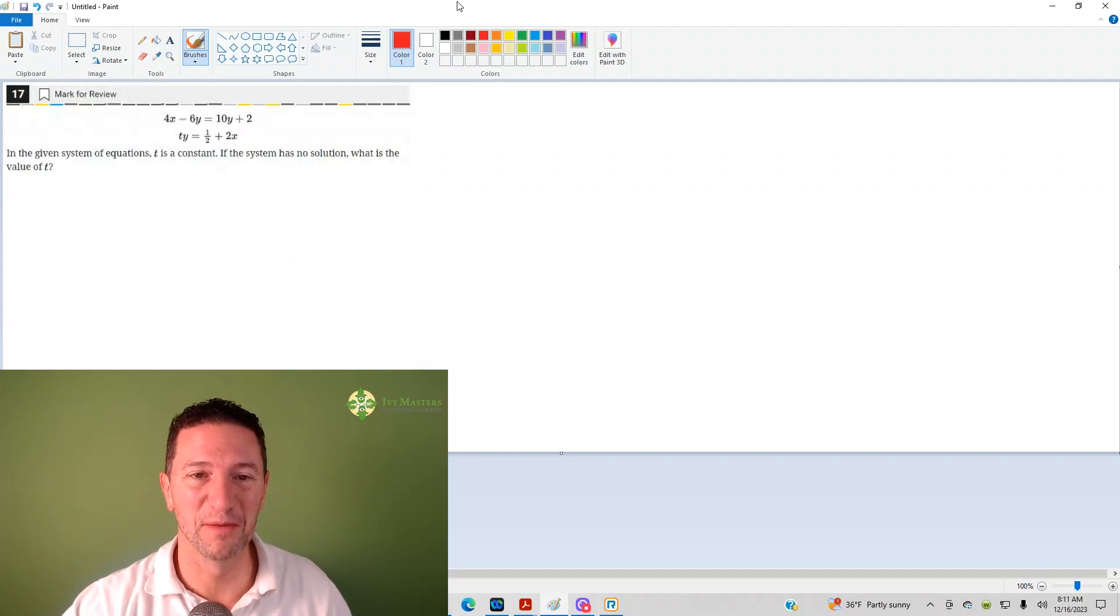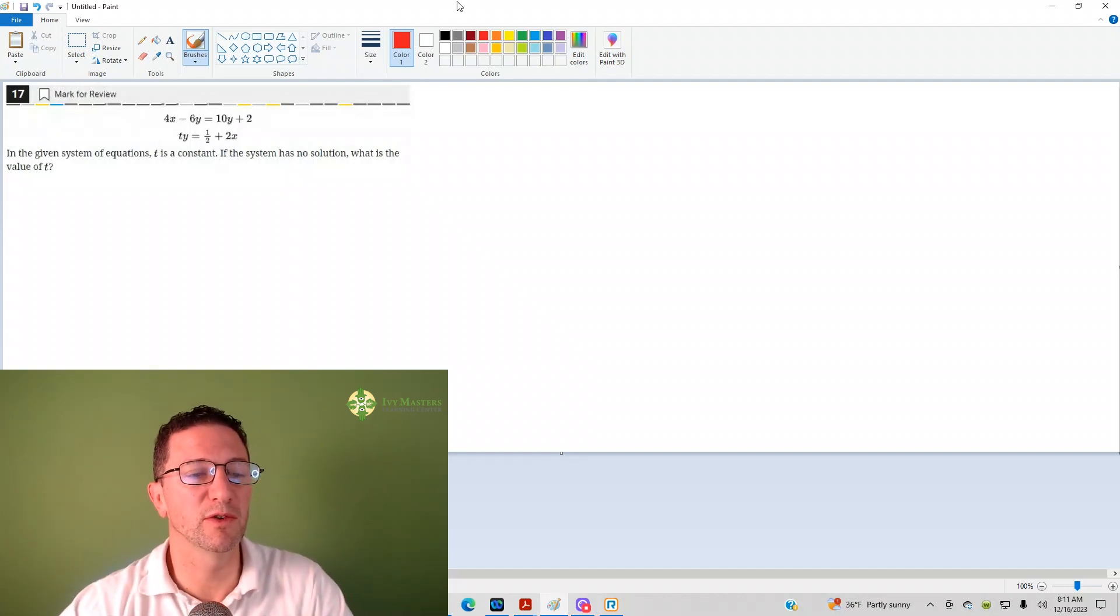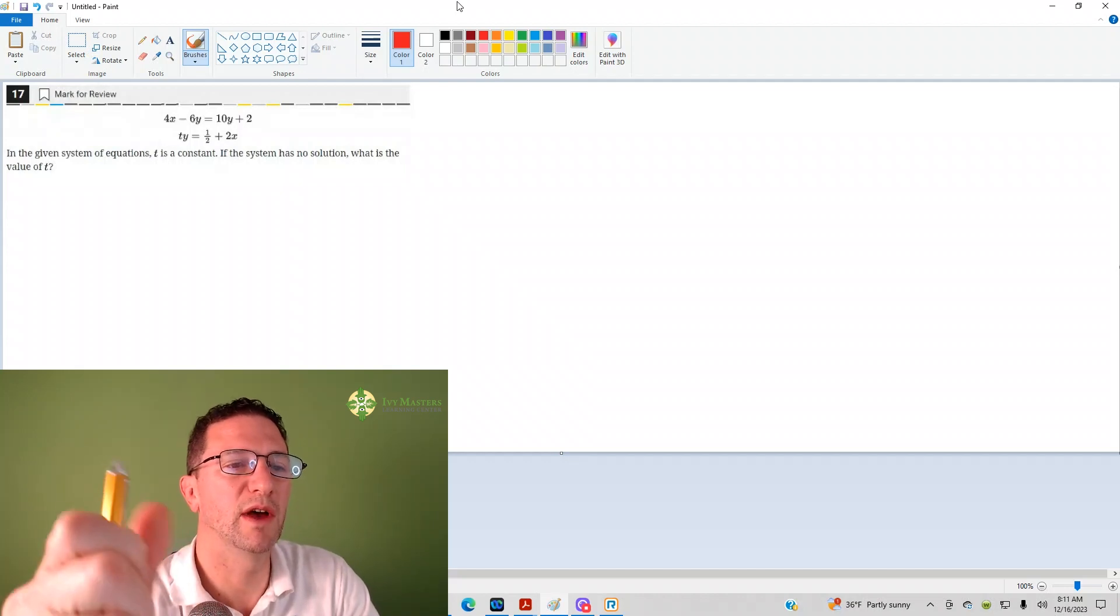Hi, I'm Paul Kosilka, Ivy Masters Learning Center at IvyMasters.com. Today we're going with the 17th question from the Digital SAT Test 1, Module 2, the harder set of math questions. Number 17 reads: In a given system of equations, t is a constant. The system has no solution. What is the value of t?